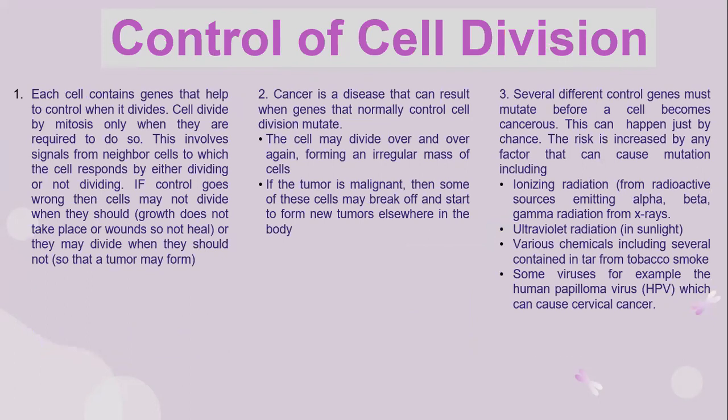Let's look into how control of cell division happens. Each cell contains genes that help to control when it divides. Cells divide by mitosis only when they are required to do so. This involves signals from neighbouring cells, to which the cells respond by either dividing or not dividing. If control goes wrong, then cells may not divide when they should, so growth does not take place or wounds do not heal; or they may divide when they should not, so that a tumour may form. Cancer is a disease that can result when genes that normally control cell division mutate.